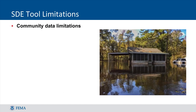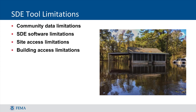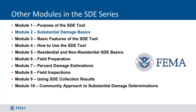When using the SDE tool, there are some limitations. The accuracy of current community data used to compile the inspection list — such as tax data and community maps overlaid with NFIP maps — can impact the inventory of properties inspected. The software cannot account for every conceivable structure type, which can impact determinations depending on the approach used. Not all properties allow direct access, which limits the accuracy of inspection of damaged building elements, both exterior and interior, for SDE determination. This training is one of a 10-part series. Please continue to Module 3.